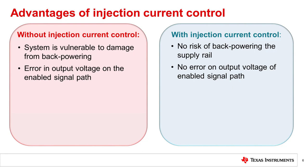Without injection current control, a system has the potential to be backpowered through the forward biased ESD protection diodes. During an injected current event, error in the output signal may be observed. This undesired change in the output can cause issues related to false trigger events and incorrect measurement readings, potentially compromising the accuracy and reliability of the system. Switches with injection current control do not have any internal diode paths to the supply pin, simplifying your system design and eliminating the risk of backpowering the supply rail.